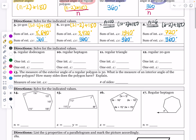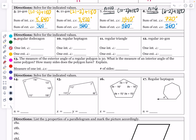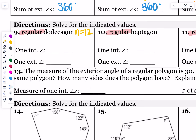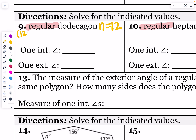Now we're going to look at regular polygons. Notice on every single one of these problems it says regular — you can only use these formulas if it's a regular polygon. For a dodecagon, n equals 12. The formula is 12 minus 2 times 180, divided by 12. That gives us 1800 divided by 12, so each interior angle is 150 degrees.